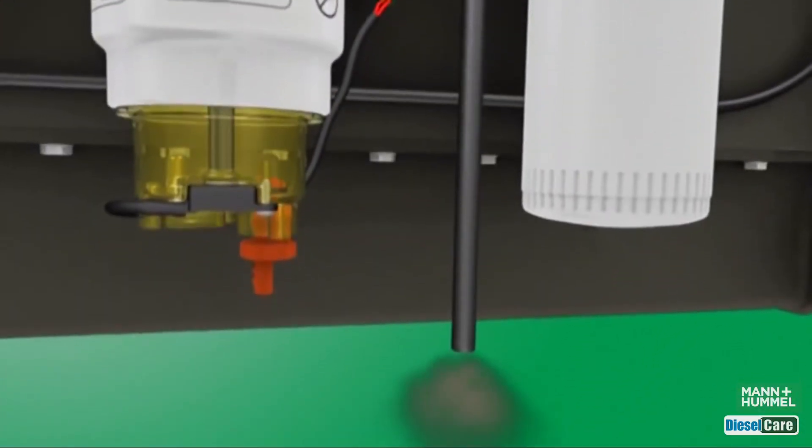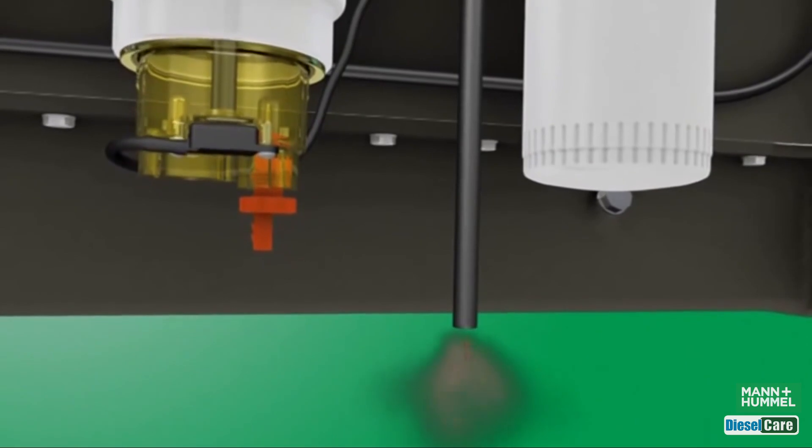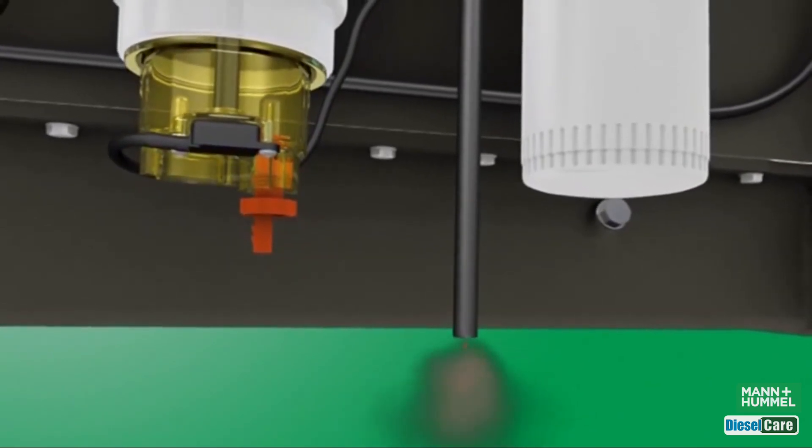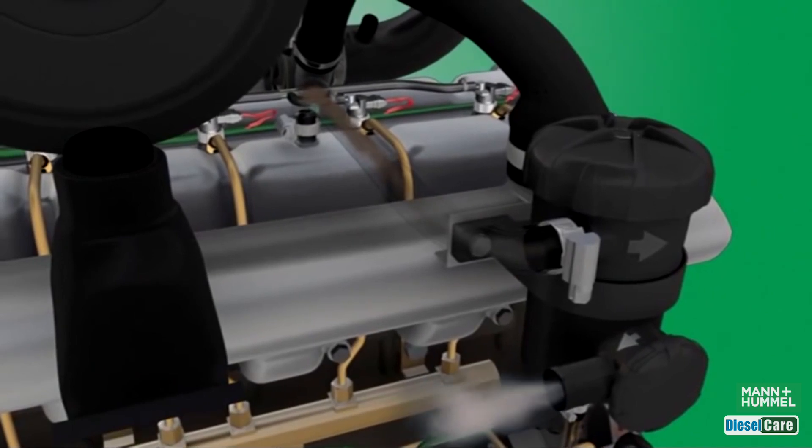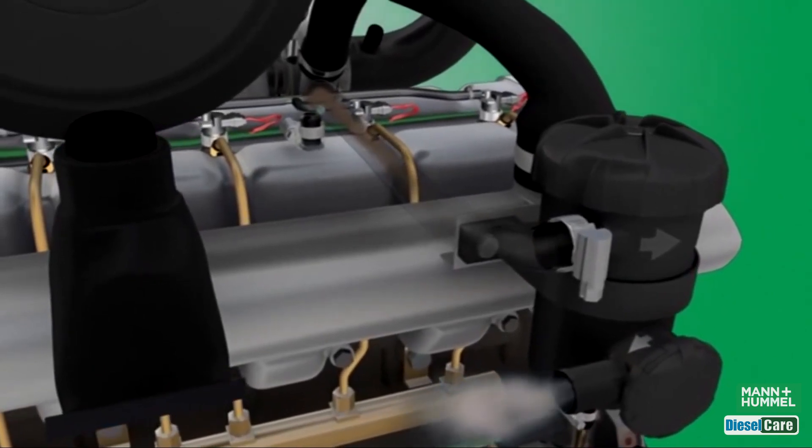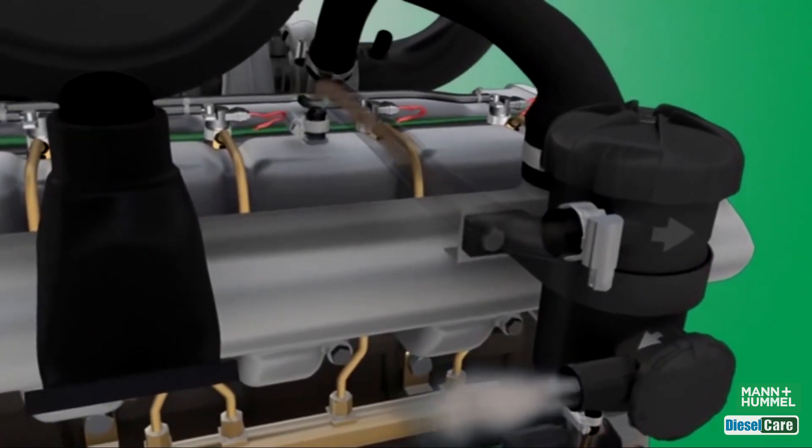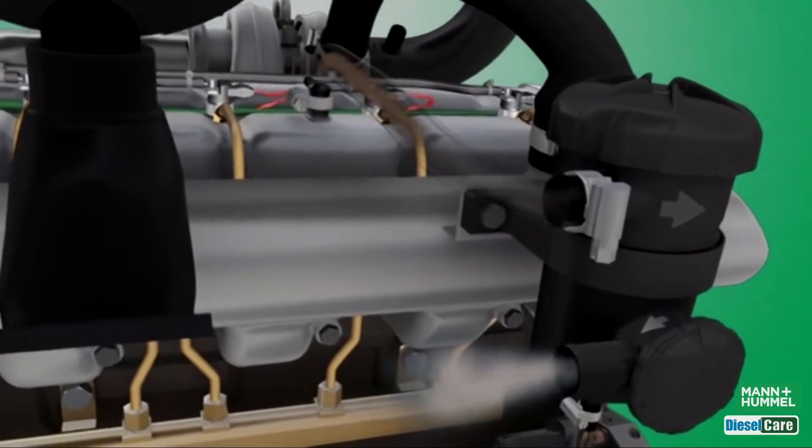However, this method results in a continual loss of engine oil and is no longer environmentally acceptable. A better solution is to remove the blow-by gas via an extraction point on the engine, such as via the rocker cover, and ventilate the crankcase using a highly efficient oil separator.